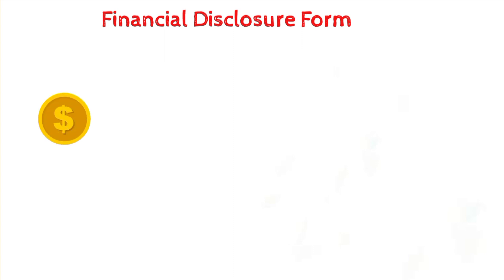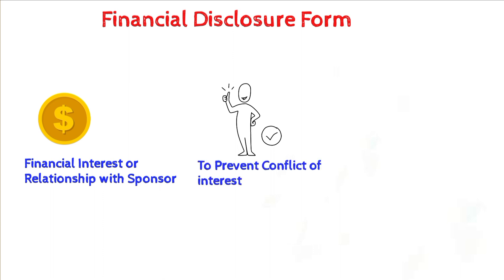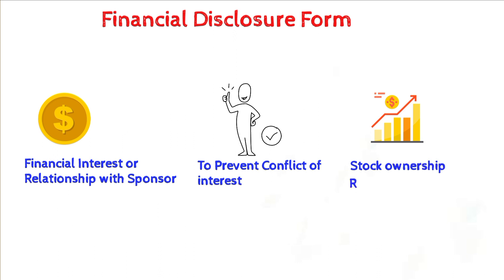Next is the Financial Disclosure Form (FDF). It is a document that requires the PI to disclose any financial interest or relationship with the sponsor or manufacturer of the study drug, device or treatment. The purpose is to ensure that the trial is conducted in an unbiased manner and to prevent any potential financial conflict of interest from affecting the results or integrity of the trial. It typically asks about financial interests such as stock ownership, consulting fees, research grants or other financial relationships that investigators or study staff may have with the sponsor or manufacturer.